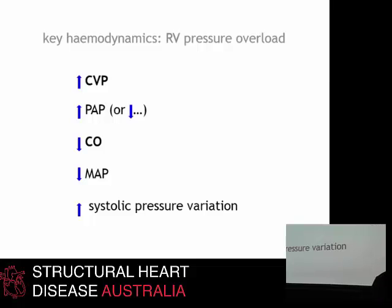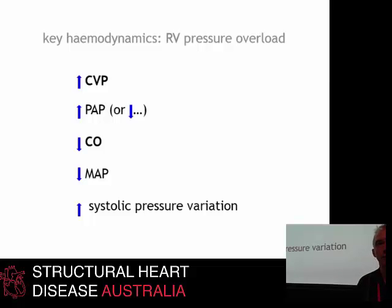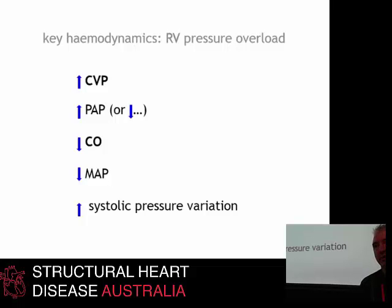If you're measuring pulmonary arterial pressure, it may be elevated — but a falling pulmonary arterial pressure is also a very ominous sign, because it means the right ventricular stroke volume is decreasing and the right heart is failing and can no longer generate the pulmonary arterial pressures it had previously. The other very bad sign is a falling cardiac output. The combination of a high CVP and a falling cardiac output, by whatever means you measure it, is a very critical sign that the right ventricle is failing.